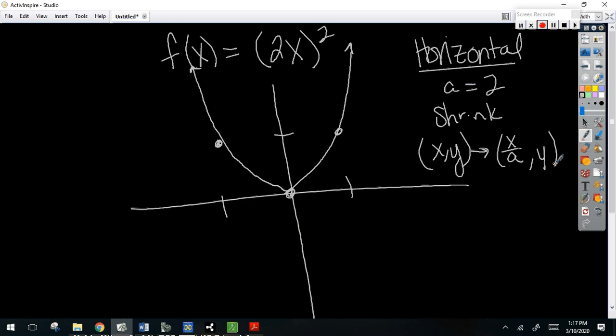Because remember, everything horizontal or X is opposite. Instead of multiplying the X's by A, I'm dividing the X's by A. Okay. 0, 0 stays the same.